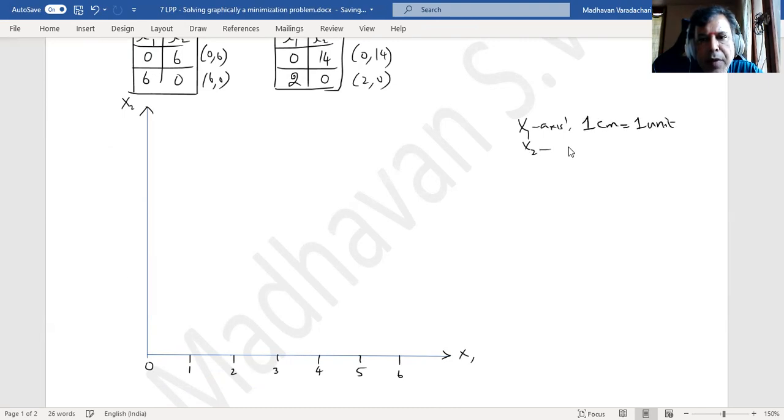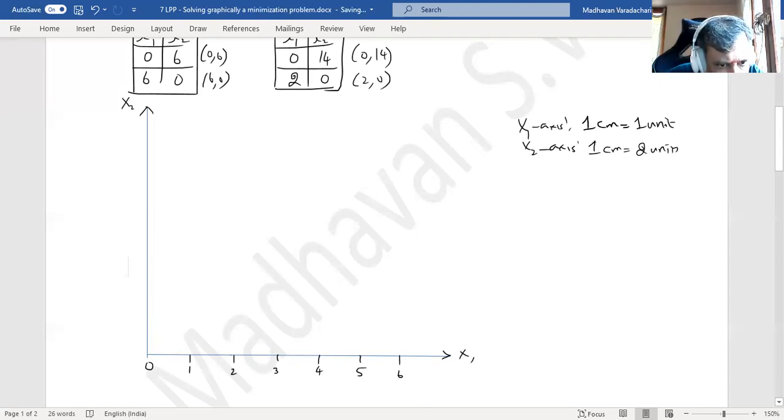I will also define our x₂ axis. Since the least is 0, maximum is 14, I will consider here 1 cm as 2 units. This will be 2, this will be 4, 6, 8, 10, 12, this will be 14.